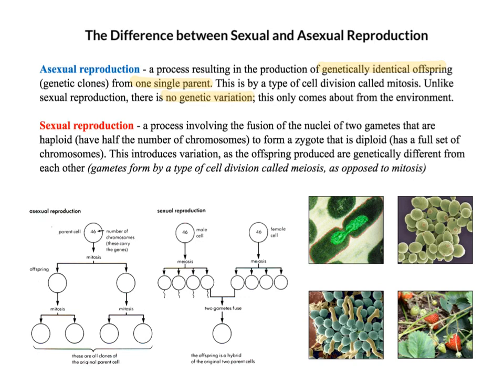With sexual reproduction, we've got the fusion of the nuclei of two gametes. So this isn't just from one single parent - we're fusing the nuclei of two gametes, for example sperm and egg. And they are haploid. Haploid means it's got half the number of chromosomes. Sperm has half the DNA that it's meant to, egg has half the DNA that it's meant to, and they come together and you get a full set of genetic material.